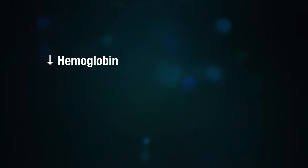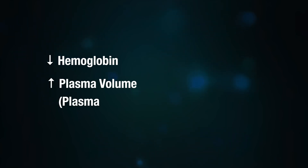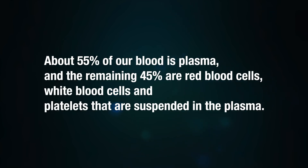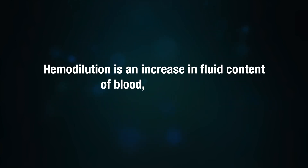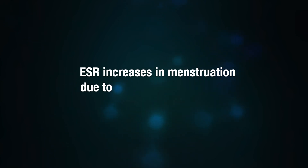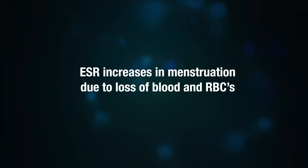Why is ESR increased in pregnancy? This is a normal physiological process and is increased in all pregnant women. It happens due to hemodilution caused by hormones from the placenta and fetus, which leads to a fall in hemoglobin levels due to an increase in plasma volume. Plasma is the liquid portion of blood — about 55% of blood is plasma and the remaining 45% are red blood cells, white blood cells, and platelets. Hemodilution is an increase in fluid content of the blood, leading to a lower concentration of red blood cells.